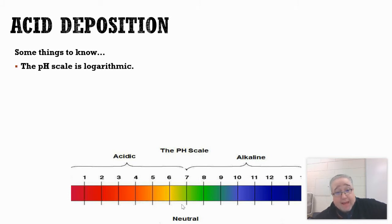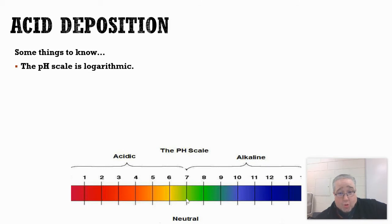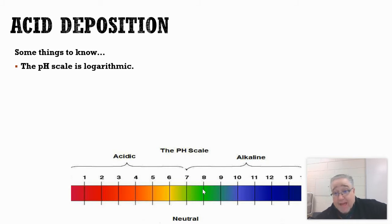First of all, the pH scale. You do need to be familiar with the pH scale. Number 7 is neutral. Less than 7 is acidic. And greater than 7 is alkaline. But each number that you go down or up, remember, since this is logarithmic, it's a power of 10.